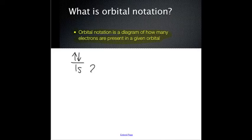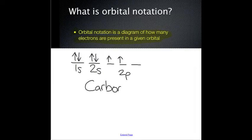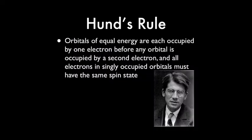In this diagram, the orbital notation for the carbon atom is drawn. Hund's rule states that orbitals of equal energy are each occupied by one electron before any orbital is occupied by a second electron, and all electrons in singly occupied orbitals must have the same spin state.